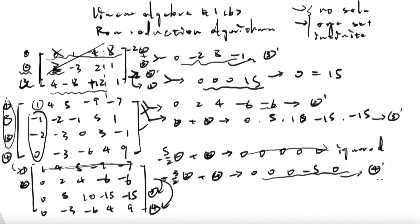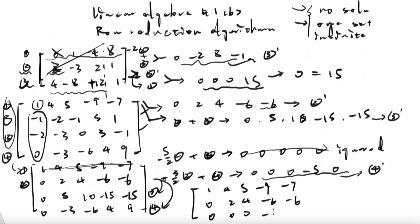Now we have our final matrix. We get the actual echelon form of our matrix here, because it's 1, 4, 5, negative 9, negative 7 for the first row, then 0, 2, 4, negative 6, negative 6 for the second row. The third row is all zeros so we ignore it. This is our new matrix, and it has its pivotal values here, here, and here. These are the pivotal values.